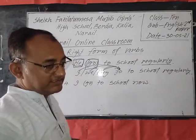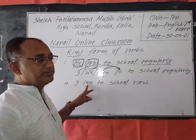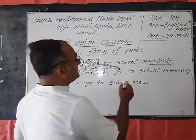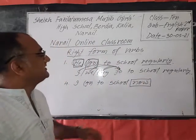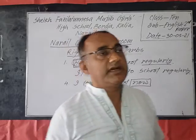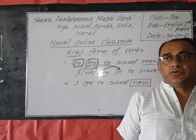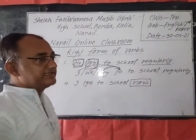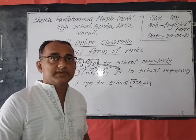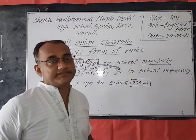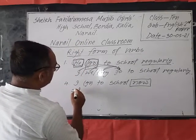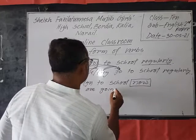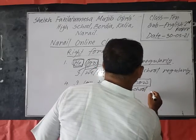Look at another sentence. Here the verb is 'go,' but what is the correct form of the verb? In this sentence, the word 'now' is present. Also words like 'at this moment' — if the word 'now' or 'at this moment' remains in the sentence, then the sentence will be present continuous tense. So we can write: 'I am going to school now.'